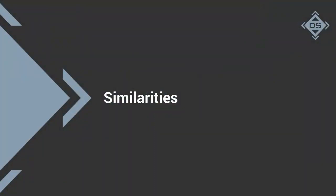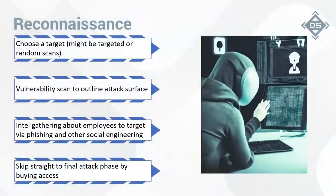We'll move right into the similarities between ransomware and other types of attacks. There's a lot of similarities, so I'll move through this quickly. As far as the reconnaissance phase goes, it's just like any APT group — they're going to choose their target. Some ransomware groups may be targeting a specific organization seeing a big payoff, but most of the time they randomly scan for vulnerabilities. They'll do vulnerability scans, outline the attack surface, figure out what they can get into, and see if there are any big red flags that'll allow them right into the network.